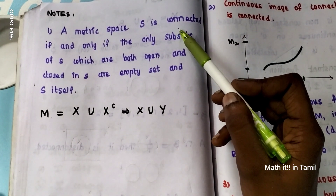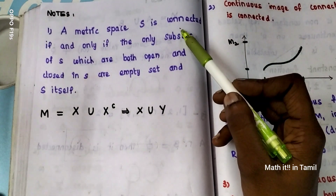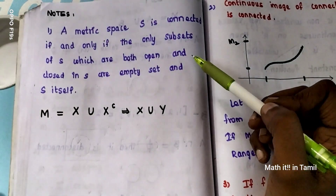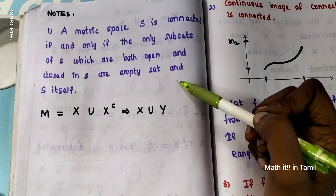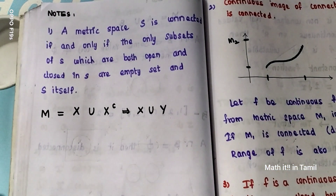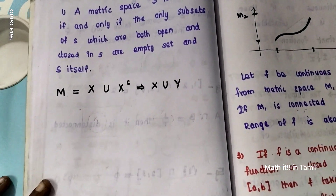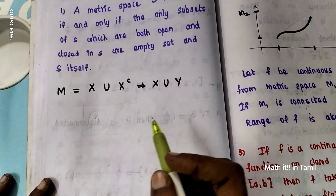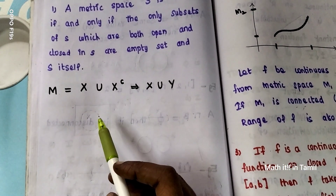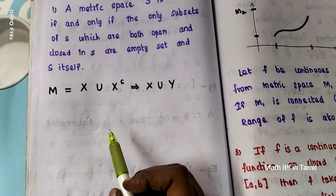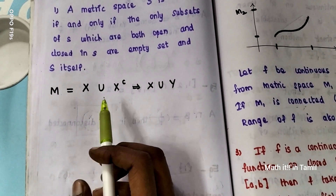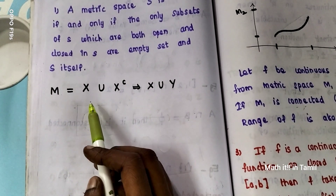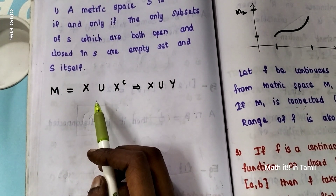That is the connected space theorem statement — this is important. A metric space S is connected if and only if the only subsets of S which are both open and closed in S are the empty set and S itself.